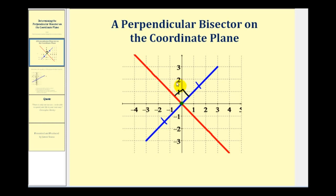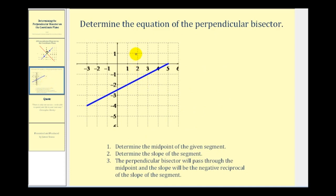Let's take a look at an example. We want to determine the equation of the perpendicular bisector of the given segment. Let's start by determining the coordinates of the endpoints. This point here would be negative three, negative four. This point here would be five, zero.